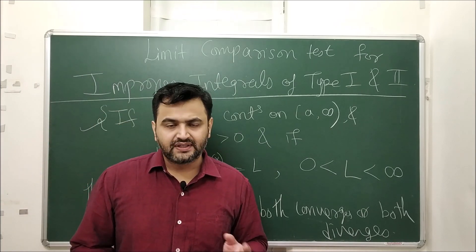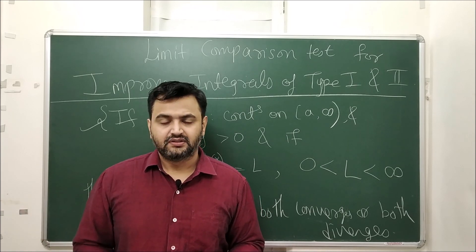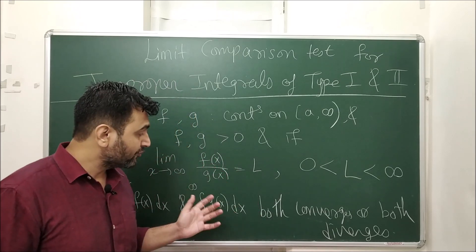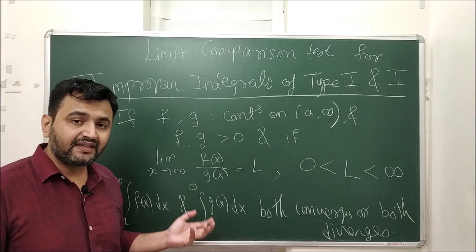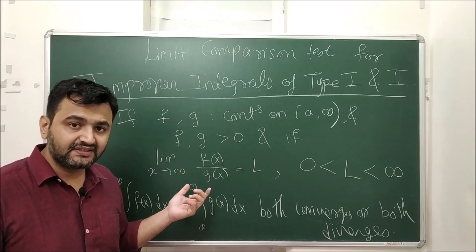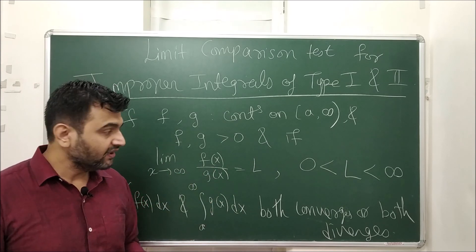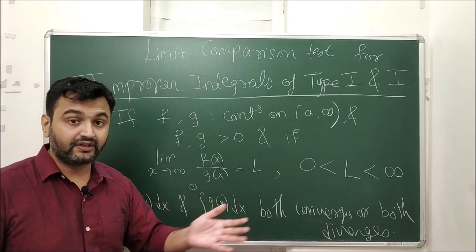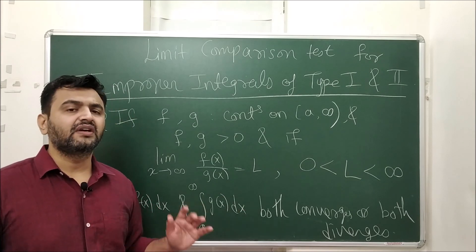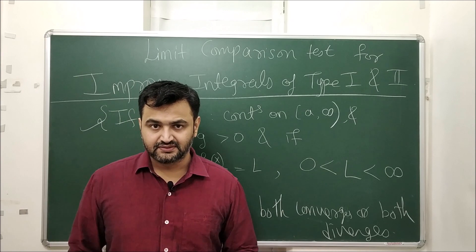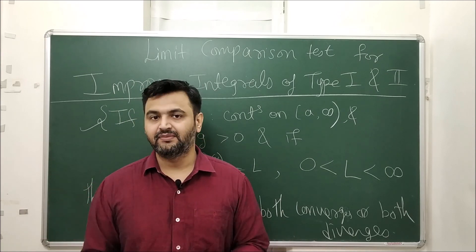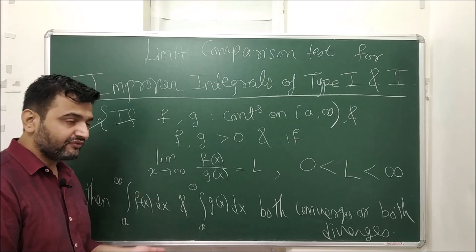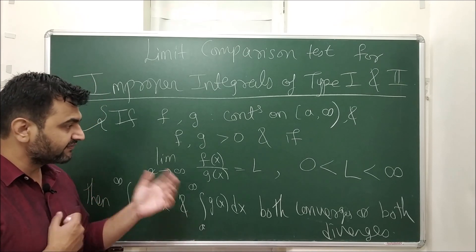Overall you can see that DCT is a much better test. Comparison is needed, but once you do the comparison it's very easy to apply. The problem with LCT is if you get zero, plus infinity, minus infinity, or a negative number as your limit L, then you cannot conclude anything — many possibilities get missed. So both have their plus and minus points. If you can compare, go for DCT; if you can't compare, try LCT — one of the tests will help you out.